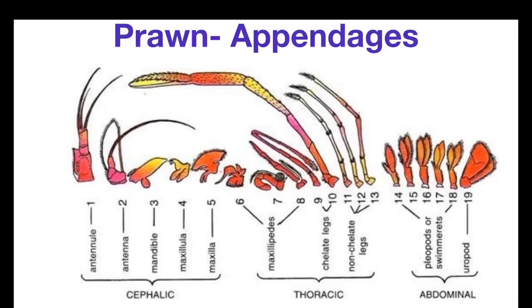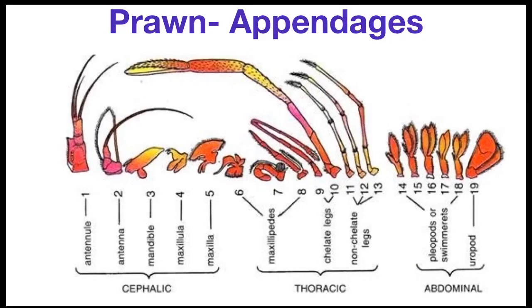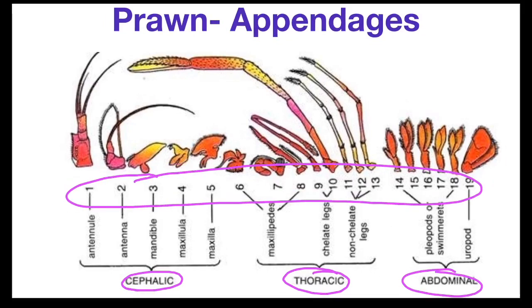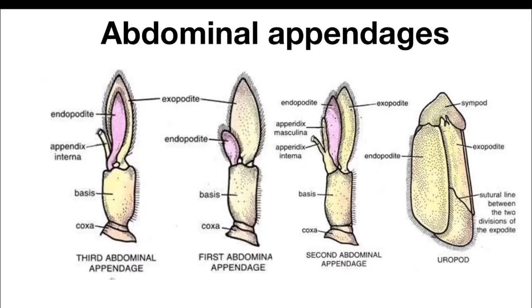Welcome to GLS Learn Life Sciences. In my first video we covered cephalic appendages, in the second video thoracic appendages, and in this video I am going to explain abdominal appendages. There are 19 pairs of appendages present in prawns. The first five pairs are called cephalic appendages, the next eight pairs are called thoracic appendages, and the last six pairs are called abdominal appendages.